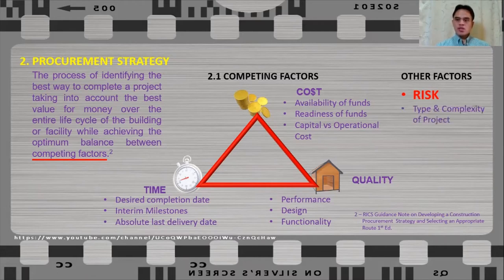The next factor is type and complexity of the project. For example, a simple factory on a greenfield will have a different consideration compared to a building at city center. So the type and complexity of the project will also affect on how you are going to develop your procurement strategy. These are the factors that needs to be considered in developing your procurement strategy.